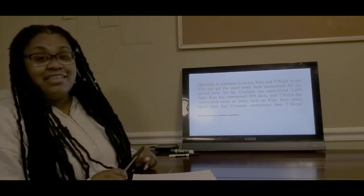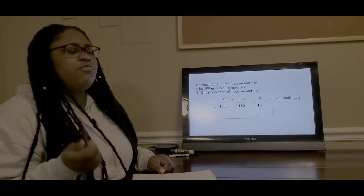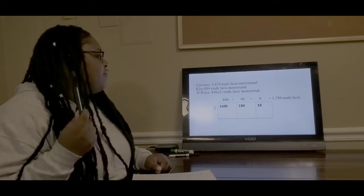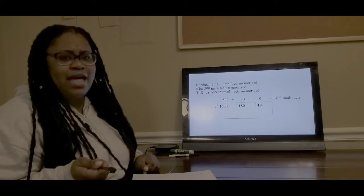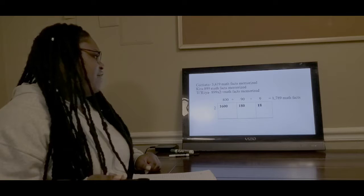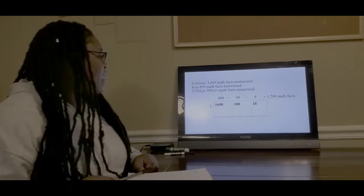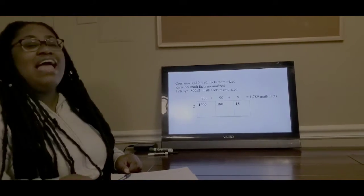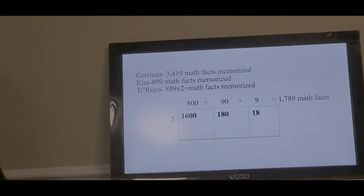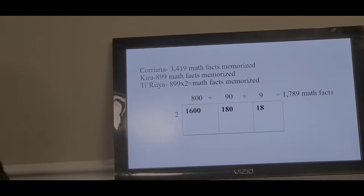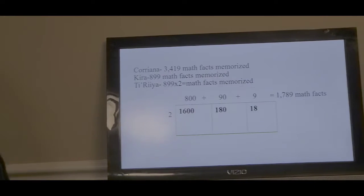Okay, now let's see if you got your answer right. The first thing I did was write down how many facts each girl had memorized. The problem told me Corianna had 3,419 math facts memorized, Kira had 899 math facts memorized, and Taraya had twice as many as Kira, which also means 899 times 2. That will let me know how many math facts Taraya had memorized.